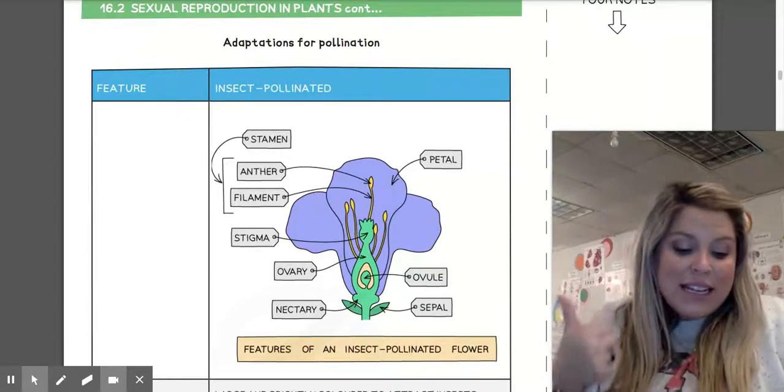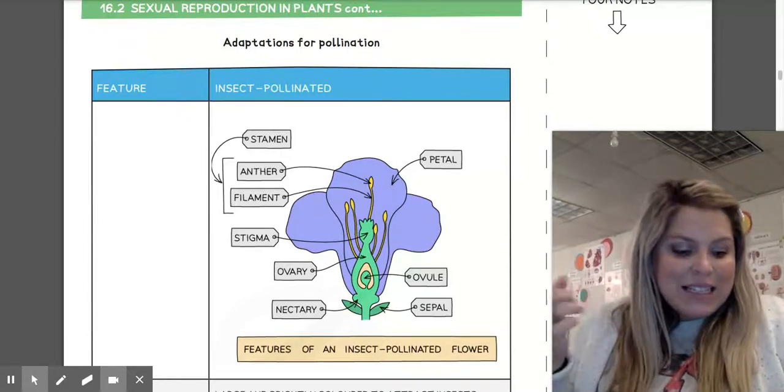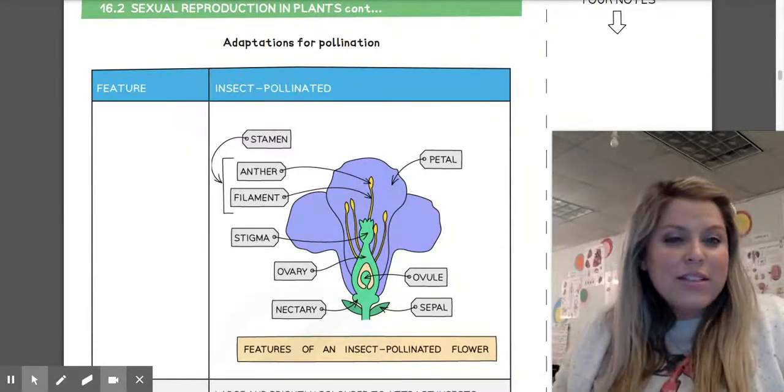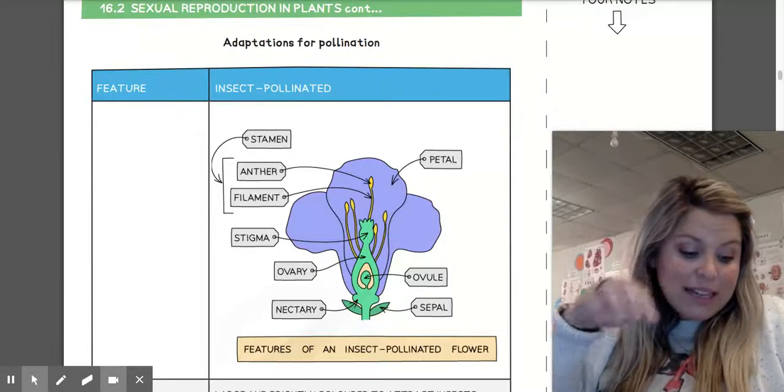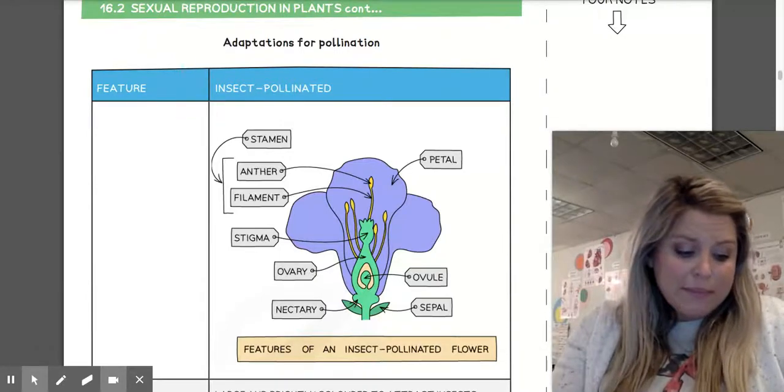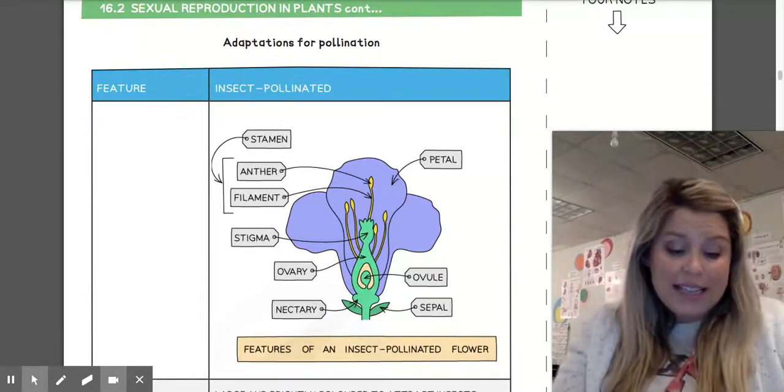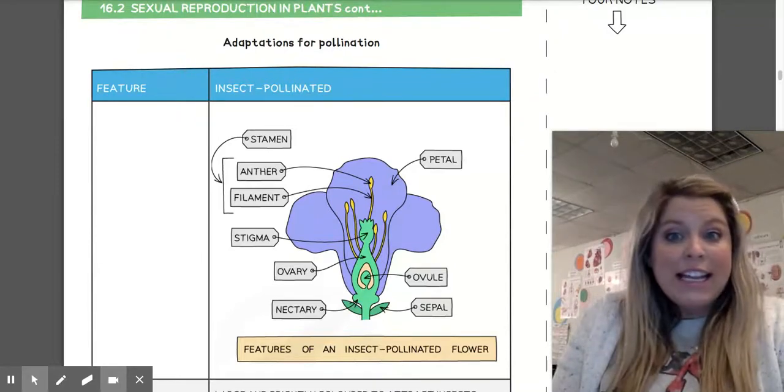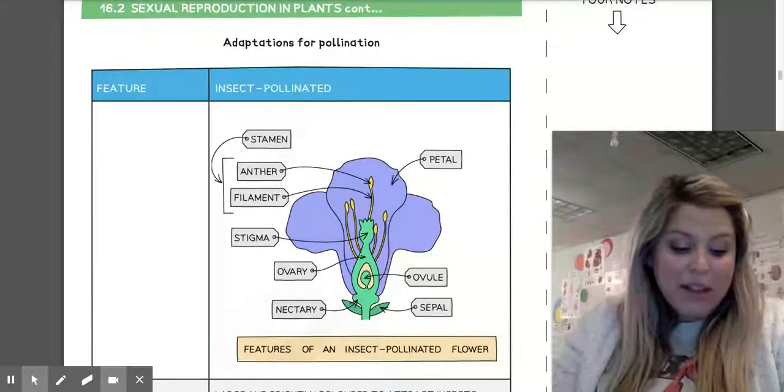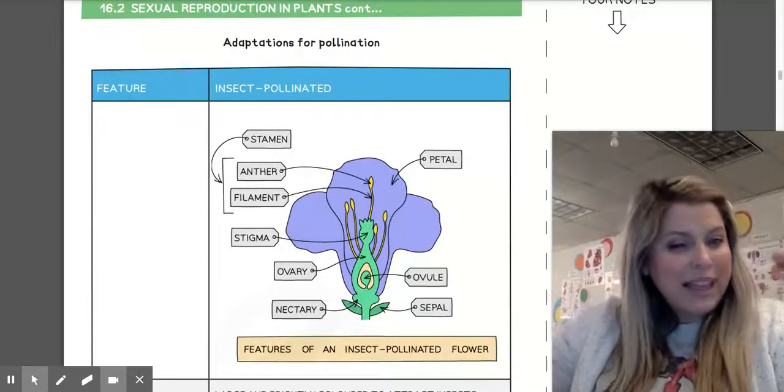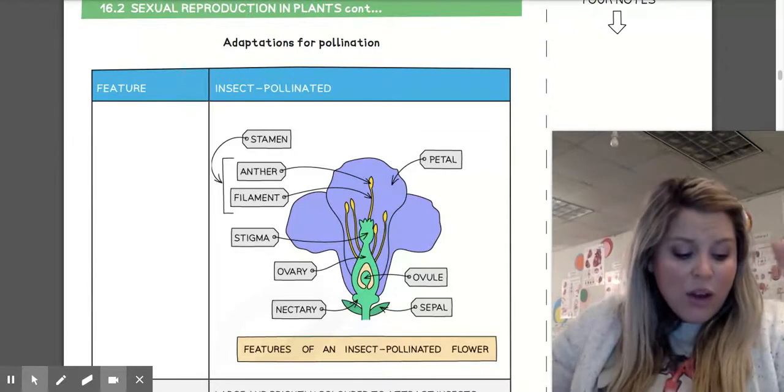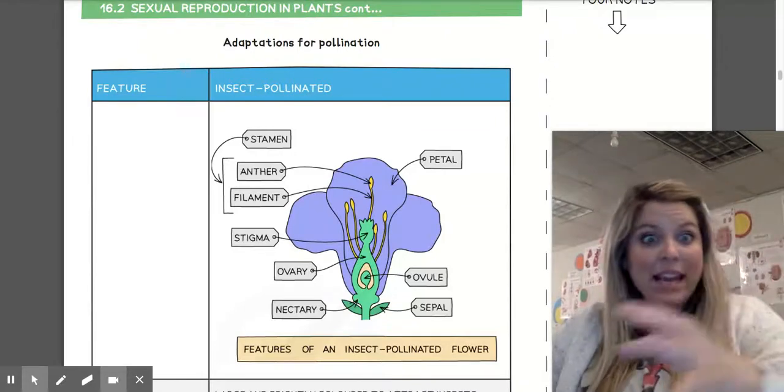They have scent and nectar that entices insects to be attracted to them. The number of pollen grains are fairly moderate because insects can transfer those pollen grains with a higher rate of success if there are more of them. Your pollen grains on an insect pollinated flower would be larger and stickier or spiky, ultimately to stick to insects and be carried by them.